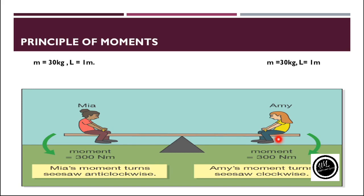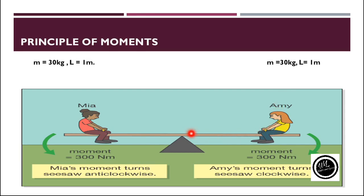When the force is acting on either side, it means that there will be a turning effect produced in the seesaw. Let's say over here we have a girl of mass 30 kg and the same on the other side. As we know that weight is also a force and the formula of weight is W equals mg. Mass is 30 kg and g is 10 m/s², so the weight equals 30 multiplied by 10, which is 300 N. Both girls have the weight of 300 N.